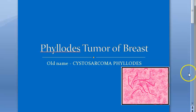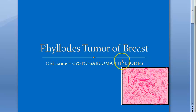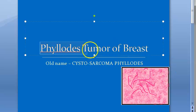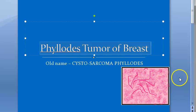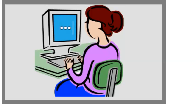To summarize phylloides tumor of breast: cystosarcoma phylloides is the old, incorrect name — it is now correctly called phylloides tumor of breast. It can be benign, borderline, or malignant. That covers the key points for the exam.